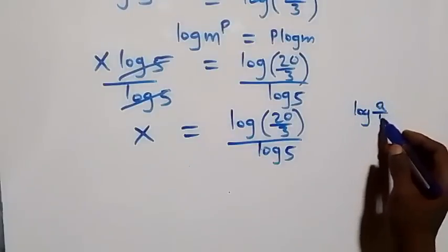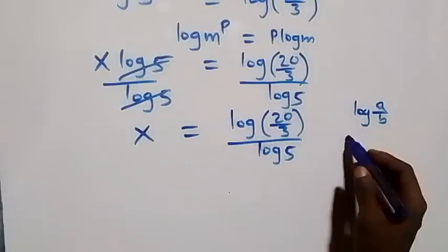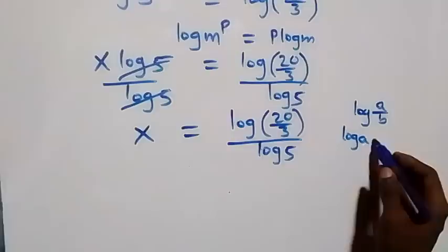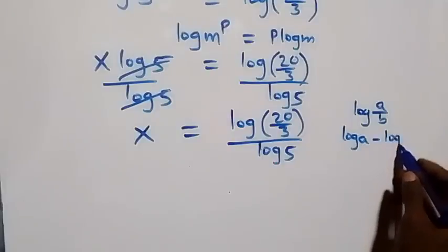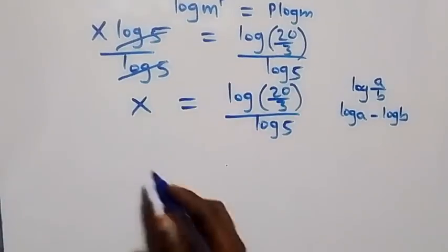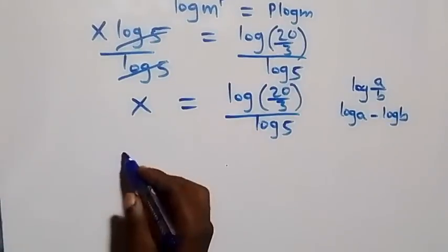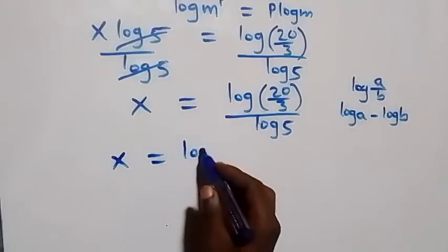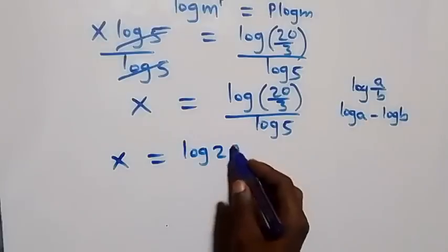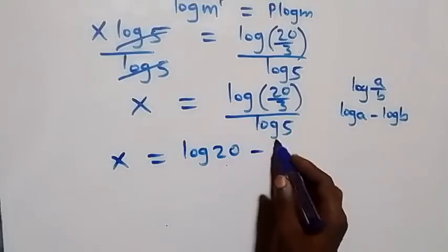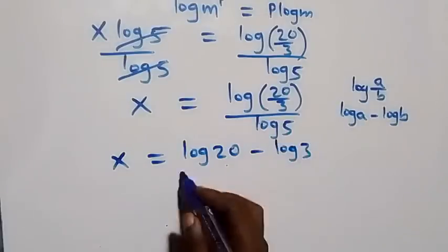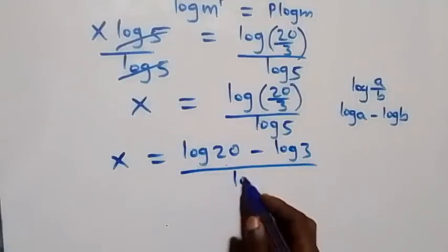When we apply the law of logarithm, log a over b is the same thing as log a minus log b. So what we have here becomes x equals to log 20 minus log 3, all over log 5.